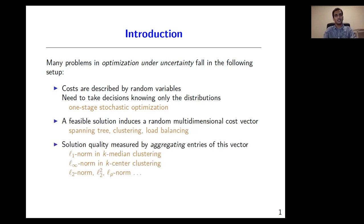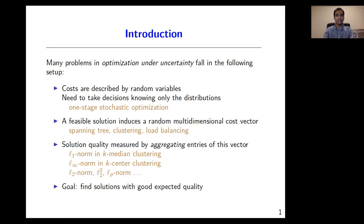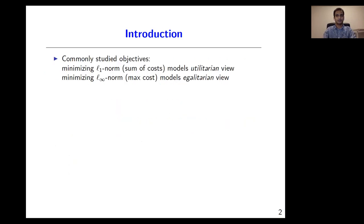The solution quality is measured by aggregating entries of this cost vector. For instance, in the well-studied k-median clustering, one looks at the sum of entries in the assignment cost vector, and in k-center, one looks at the maximum entry in the assignment cost vector. The goal in such settings is to find a solution which has good quality in expectation.